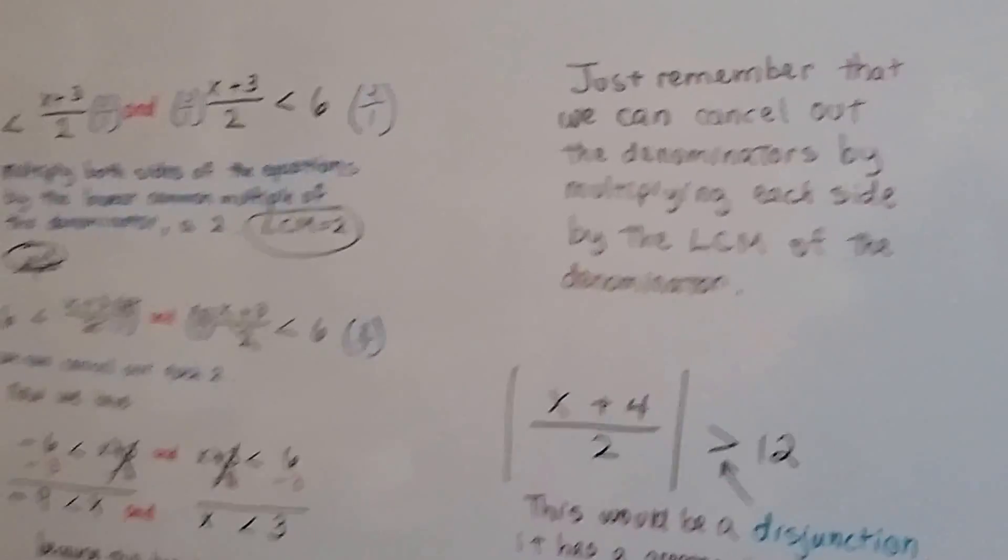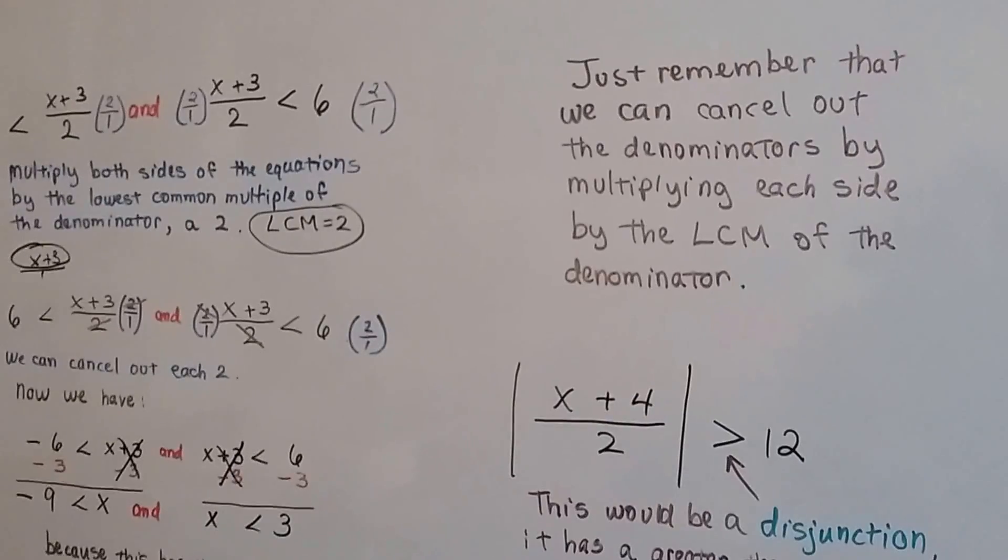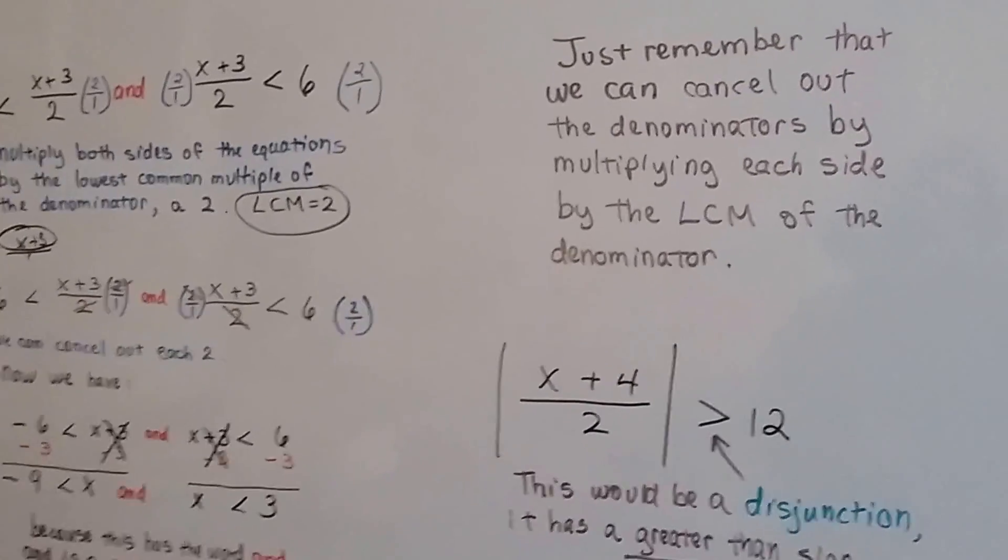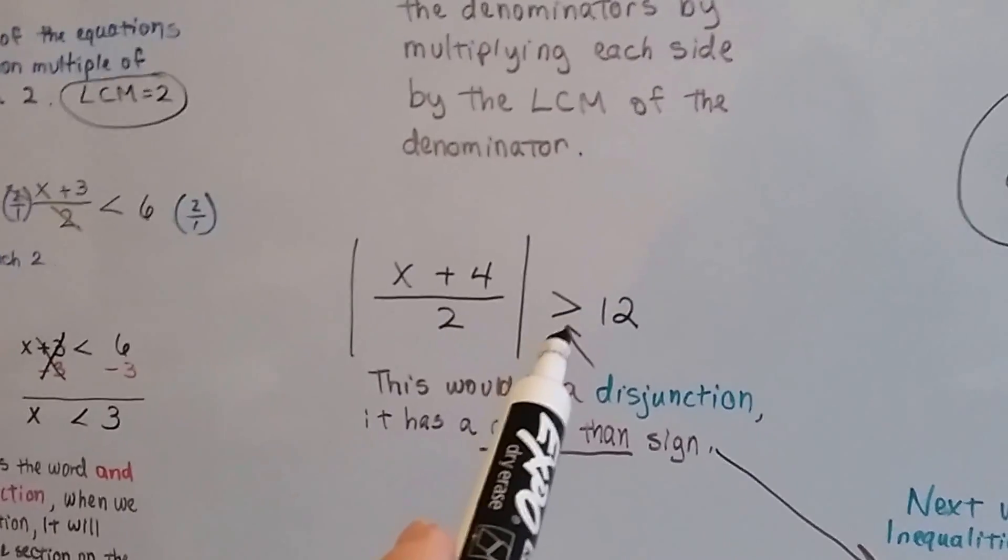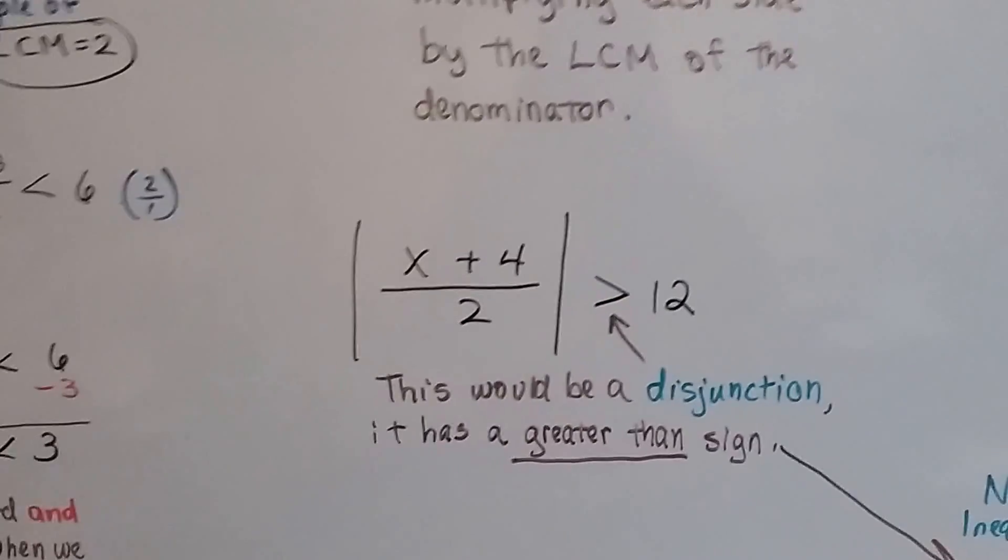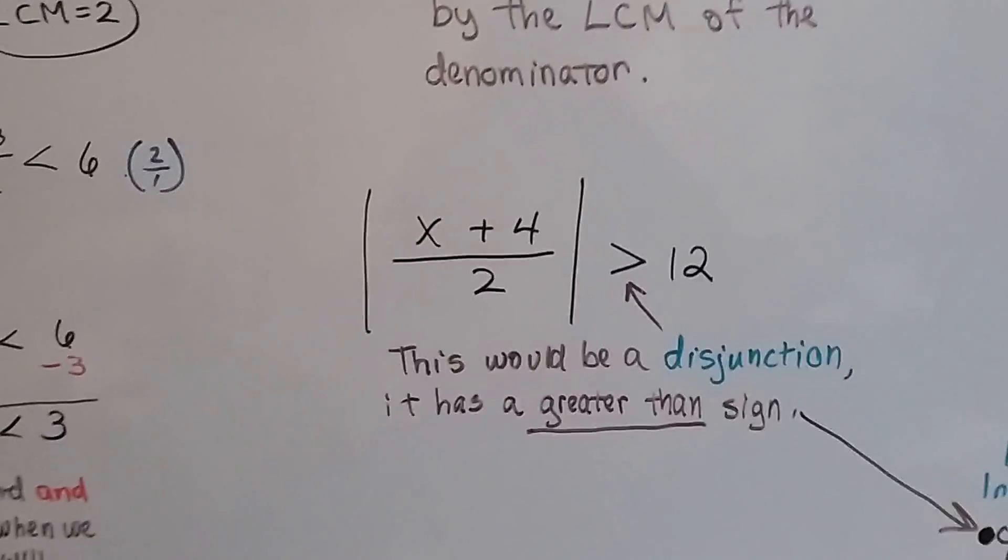So just remember that we can cancel out the denominator by multiplying each side by the least common multiple, the lowest common multiple of the denominator. And remember, if you see the sign heading this way, it's a disjunction because it has a greater than sign. So that's an or.